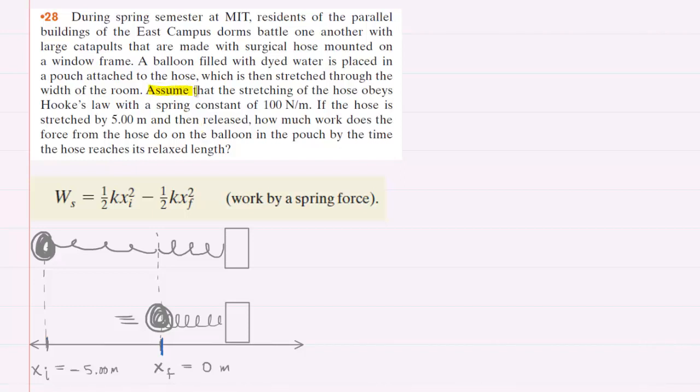In this question we are told that we can assume that the stretching of the hose obeys Hooke's law with a particular spring constant. So that means that in order to calculate the work done we can use the equation for the work done by a spring.